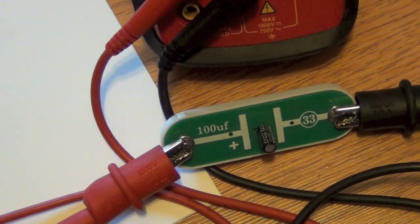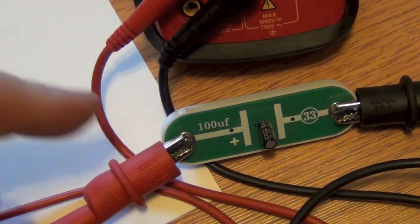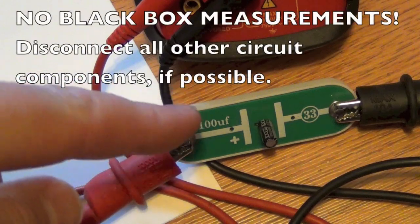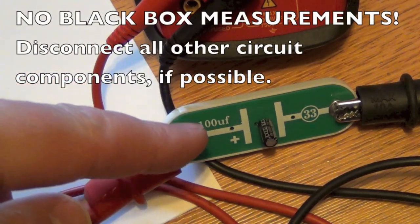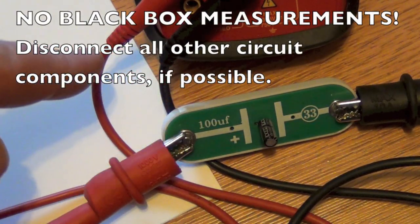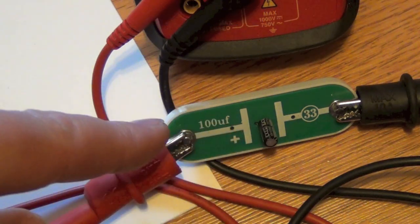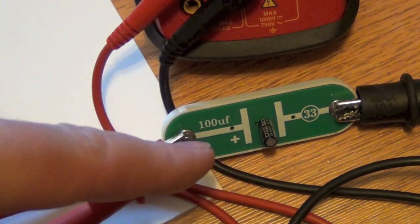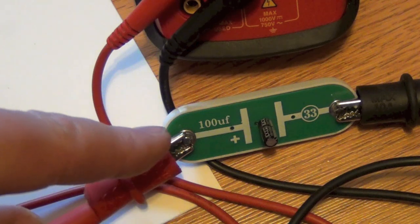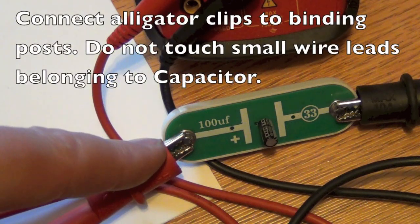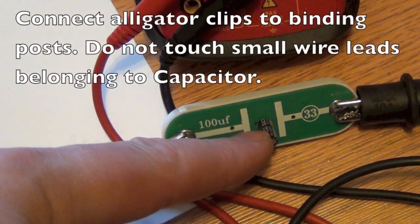Very much like with the resistor or inductor, whenever you're measuring a capacitor make sure that you're not connected to other components. You want to make sure you're just measuring the capacitance of this capacitor. Isolate the capacitor, and just like the other components, please don't connect the alligator clips to the wires coming off the capacitor. Instead, find a post nearby that you can connect.